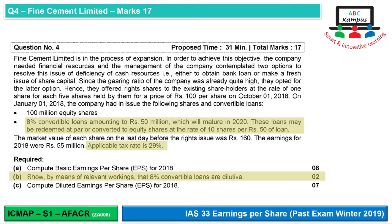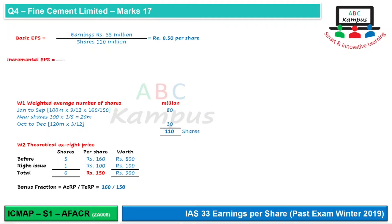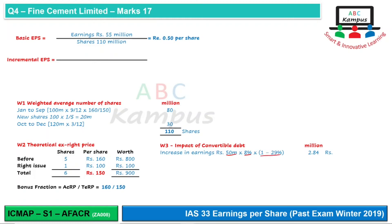Our second part requires us to show by means of relevant working that the 8% convertible loans are dilutive. The 8% convertible loans amount to Rs. 50 million, maturing in 2020, convertible to equity shares at 10 shares per Rs. 50 of loan. We calculate the impact: increase in earnings would be Rs. 50 million × 8% = Rs. 4 million interest, and after removing 29% tax, the after-tax saving is Rs. 2.84 million.